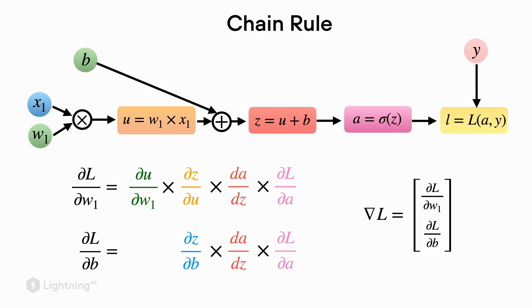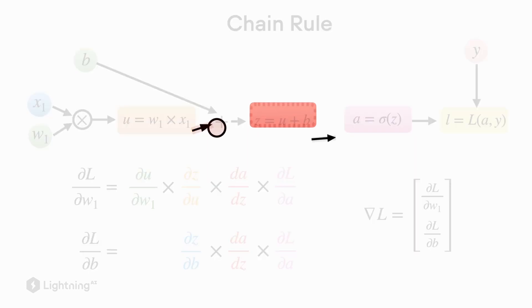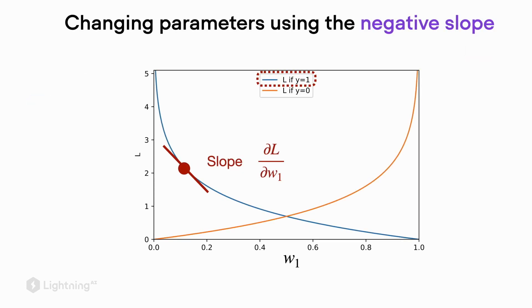this is again the computation graph for logistic regression. And on the right-hand side, we can see the loss gradient, which consists of these two partial derivatives with respect to the model parameters that we want to update. And we can think of this partial derivative of the loss with respect to one of the weights as the slope of this loss function at a given point.